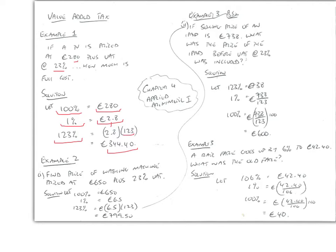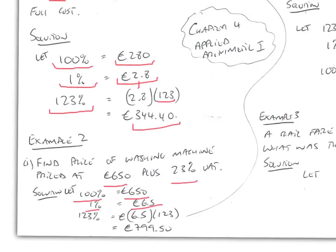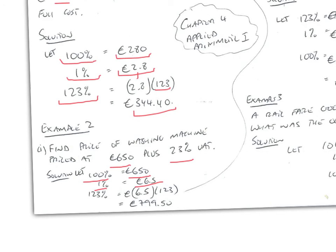Second example, find the price of a washing machine priced at 650 euros plus 23% VAT. So, the solution is to let 100% equal the 650 euros cost of the washing machine. If that's the case, 1% is 650 divided by 100, 6.5 euros. And therefore, the final price of the washing machine must be the 100% of the machine plus the 23% the VAT added on, 123%. So, we've multiplied this 6.5 by 123 and our final answer is 799.50.